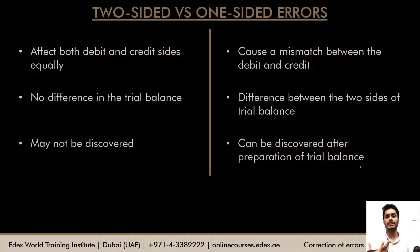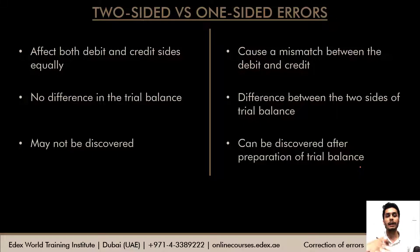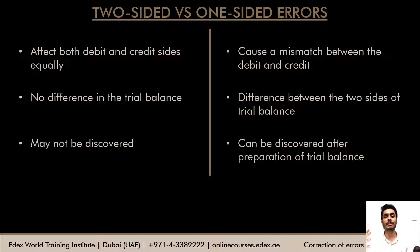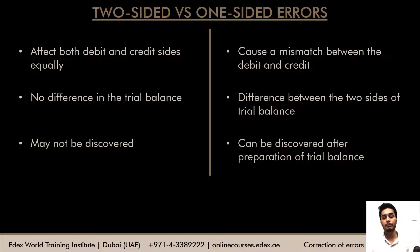When the trial balance matches in the case of a two-sided error, it is difficult to discover the error later, because once the trial balance has matched we assume our accounting records are correct and go ahead to prepare the financial statements. But when we see a mismatch in the trial balance, we realize there are definitely some errors in the ledger or books of prime entries, so we go back, look for the errors and rectify them. It is much easier to ensure one-sided errors are discovered and rectified.